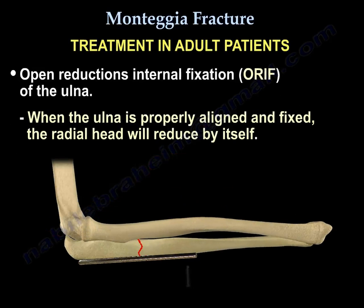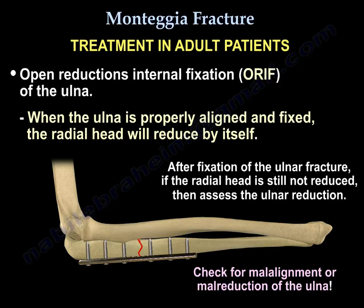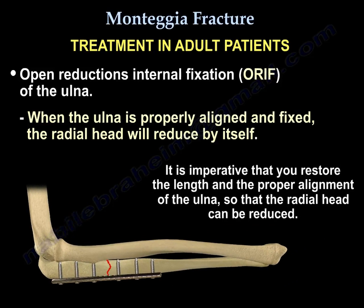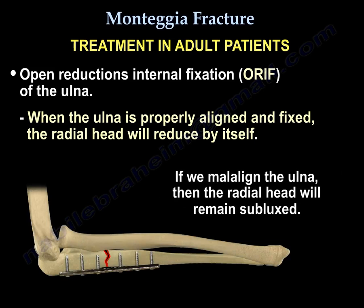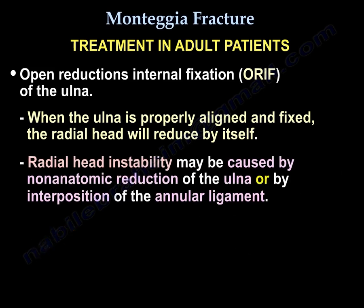When the ulna is properly aligned and fixed, the radial head will reduce by itself. After fixation of the ulnar fracture, if the radial head is still not reduced, then assess the ulnar reduction and check for malalignment or malreduction. It is imperative to restore the length and proper alignment of the ulna so the radial head can be reduced. If the ulna is malaligned, the radial head will remain subluxed. Radial head instability may be caused by non-anatomic reduction of the ulna or by interposition of the annular ligament.